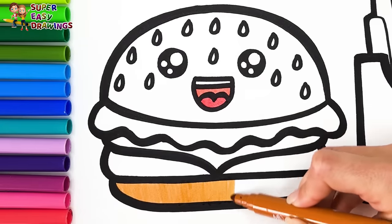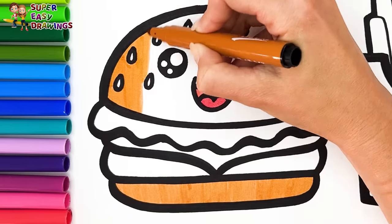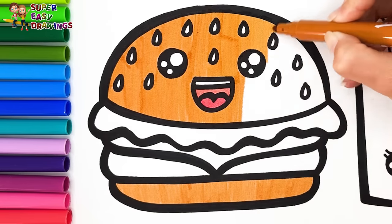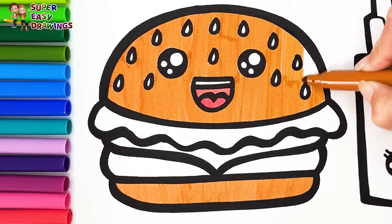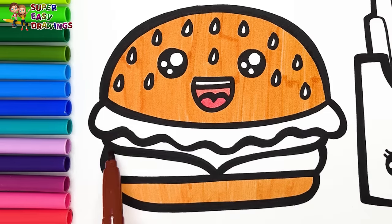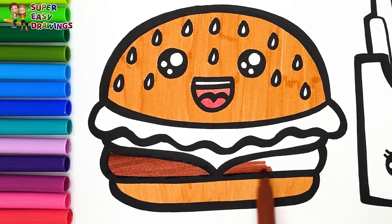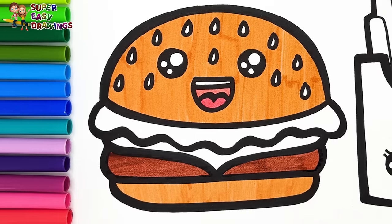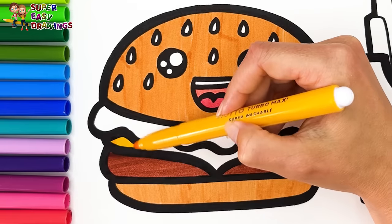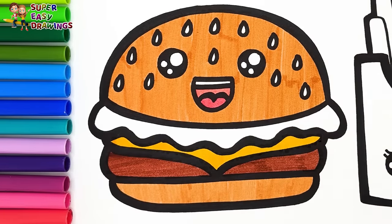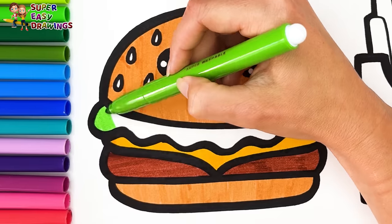For the burger buns, I used the light brown color. And a little dark brown for the meat. And yellow for the cheese. I used green for the salad.